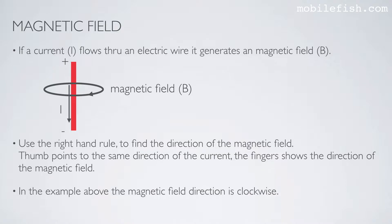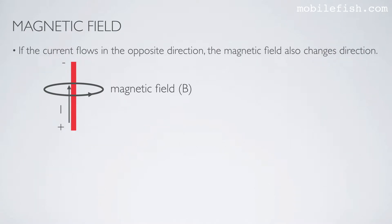In the example above, the magnetic field direction is clockwise. If the current flows in the opposite direction, the magnetic field also changes direction. In the example above, the magnetic field direction is counter-clockwise.